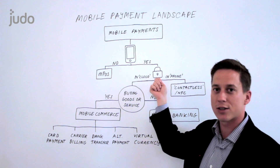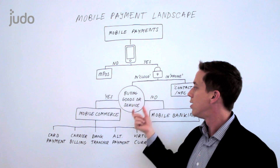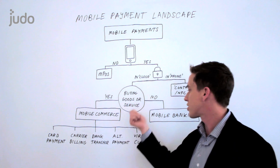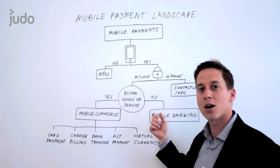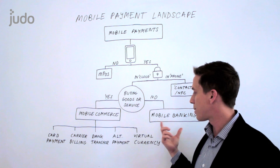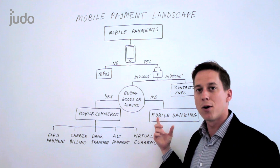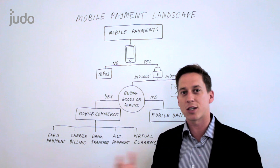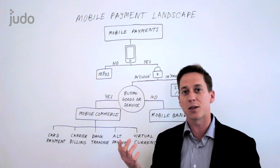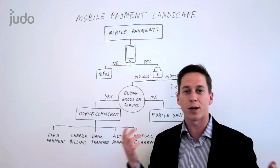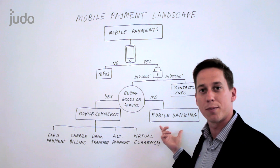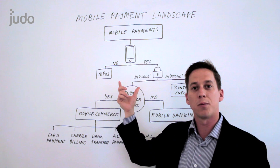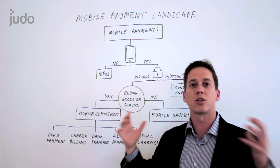Coming back to where that secure element is — if we go in the cloud, then the key question is: are you buying a good or service? If the answer is no, then we're talking about mobile banking. Mobile banking is particularly big in the developing world, where we bypass traditional bank accounts and the mobile phone is actually being used to move money from peer to peer. There are a lot of different elements in mobile banking, and unfortunately it's being lumped under mobile payments, where it really belongs in its own separate category.